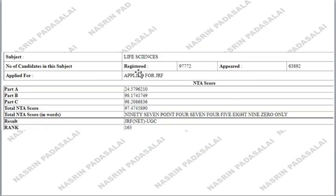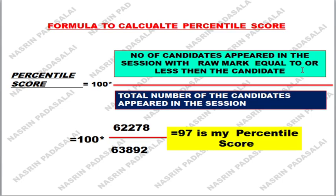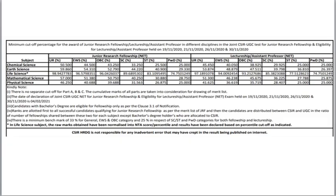For example, based on my result — in the scorecard itself you will get the total number of candidates registered in Life Sciences and the total number who appeared. Total number of candidates who appeared: 63,892. Total number of candidates who got a raw mark less than or equal to mine: 62,029 (approximately 62,278). Applying the formula gives a percentile score of 97. This is what the minimum cutoff percentile looks like.